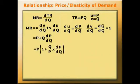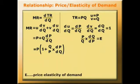This equals P times 1 plus Q over P times dP by dQ. Now P over Q times dQ by dP is equal to E, where E equals the price elasticity of demand. So, inverting both sides, Q over P times dP by dQ equals 1 over E.